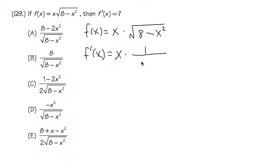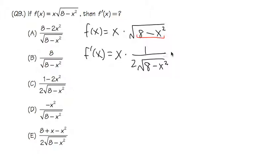The derivative of the square root of something is 1 over 2 times the square root of the same thing inside, which is 8 minus x squared. We also need to apply the Chain Rule — look at the inside: the derivative of 8 is 0, and the derivative of negative x squared is negative 2x. That negative 2x is the Chain Rule term.